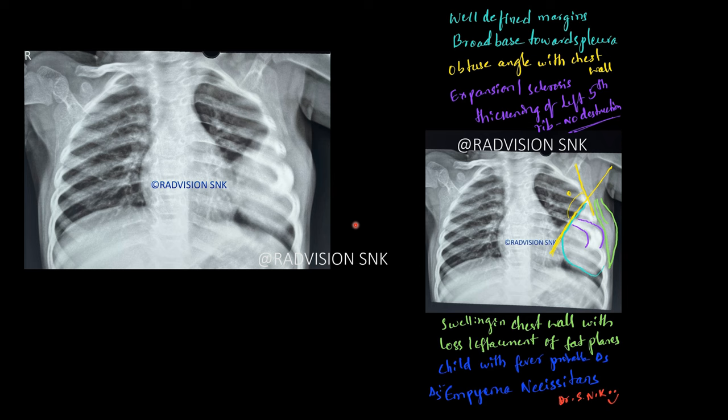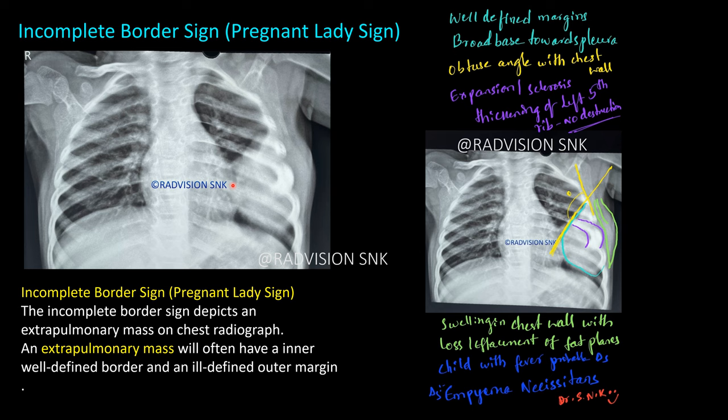This was a case of empyema necessitans. The sign to remember is the incomplete border sign or pregnant lady sign: the medial borders are very clearly and sharply demarcated compared to the lateral borders, because the X-ray rays are tangential to the medial border. The lateral borders are seen merging with the chest wall. The obtuse angle between the mass and the chest wall differentiates extra-pulmonary masses from pulmonary masses.